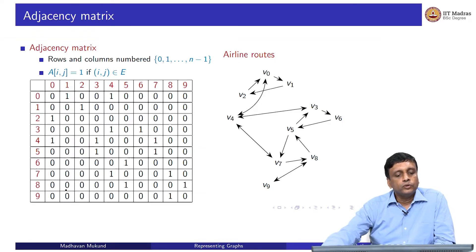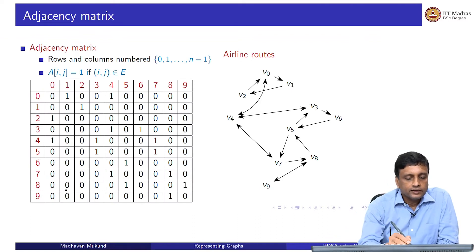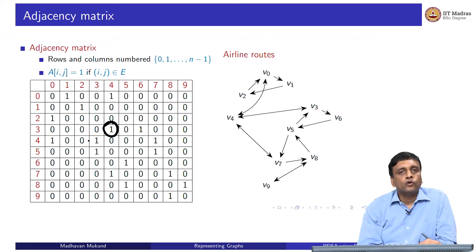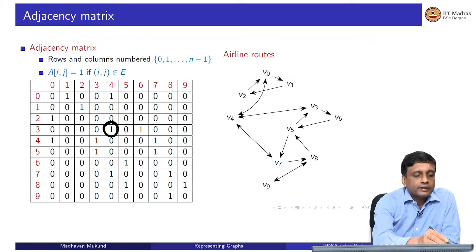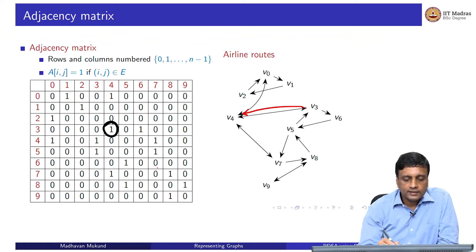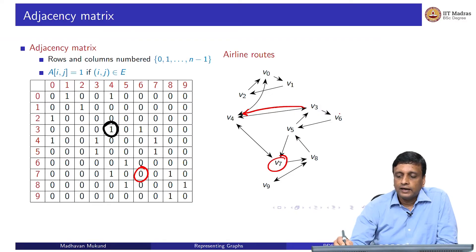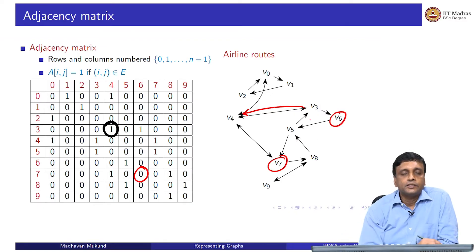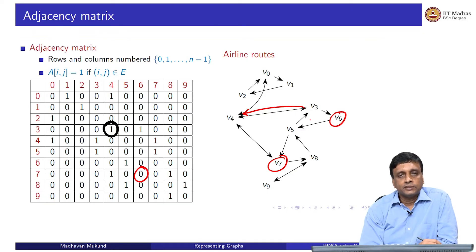If we do this, we get a matrix which we can visualize. For instance, it says that 3 comma 4 is 1, which means that in my graph I should have an edge from 3 to 4. Or it says that 7 comma 6 is 0, so I should not find an edge between them. The 0s represent edges which are not there, and the 1s represent edges which are there.